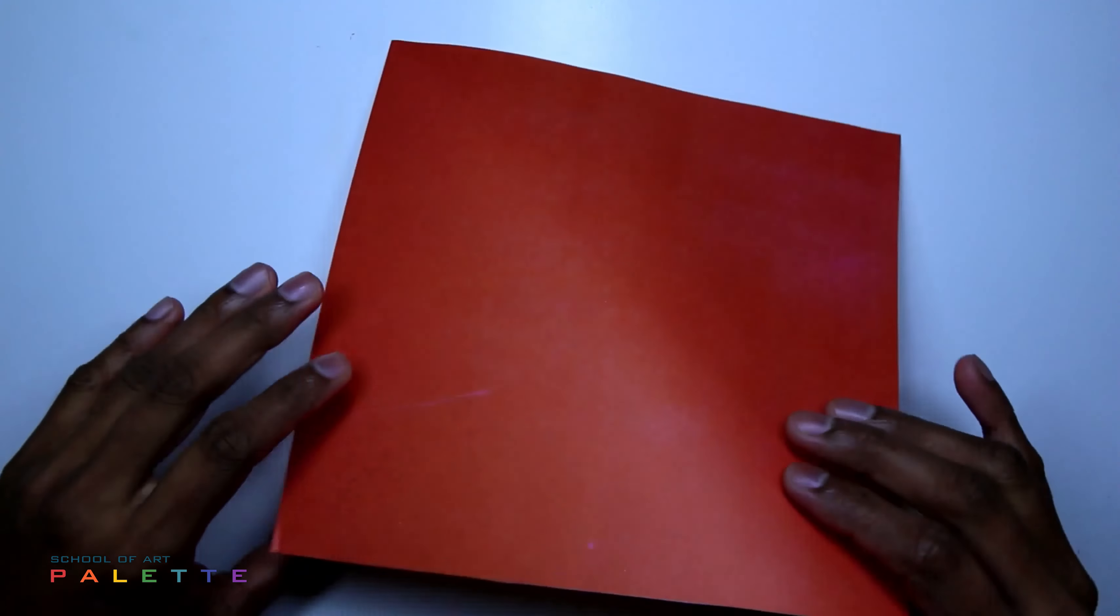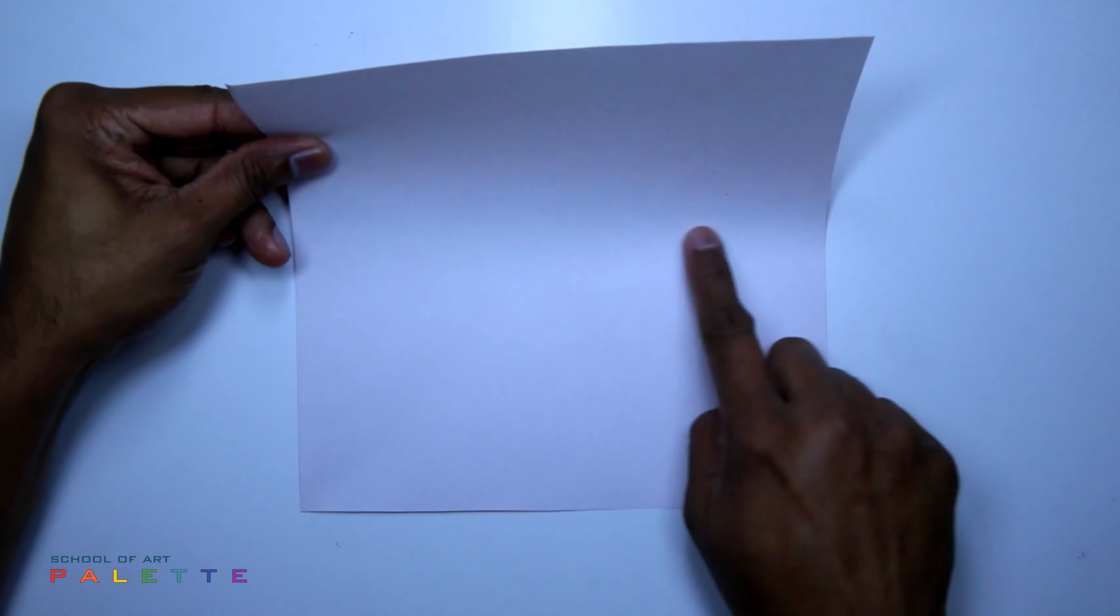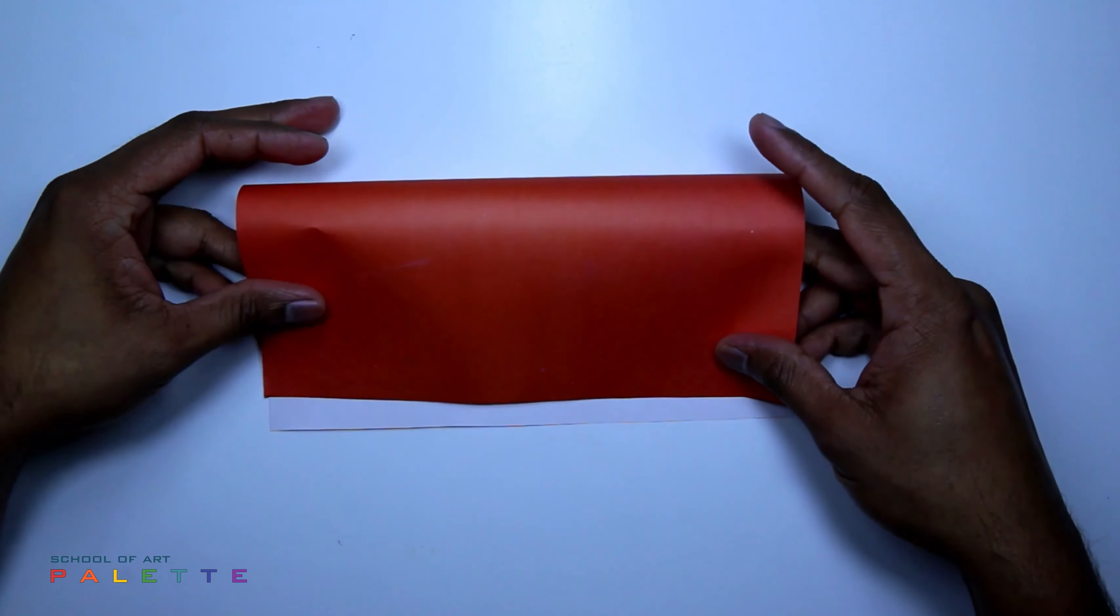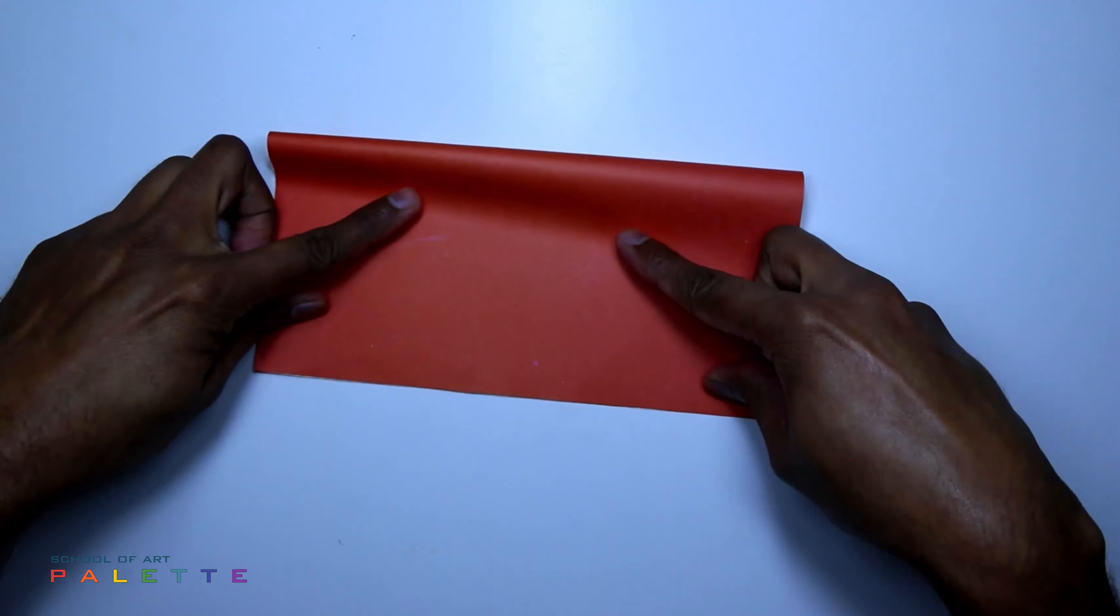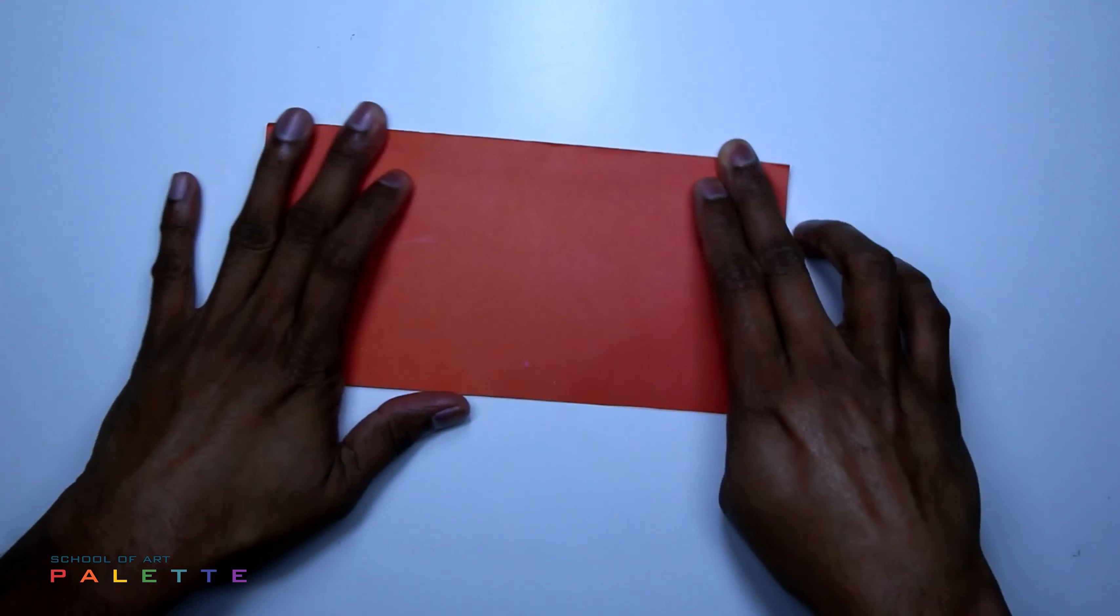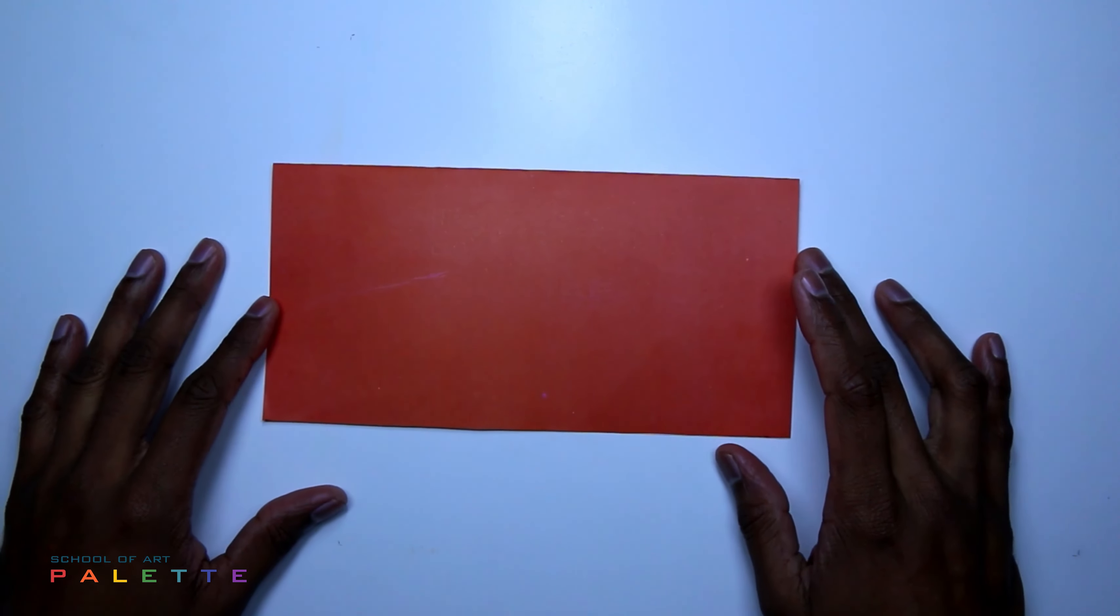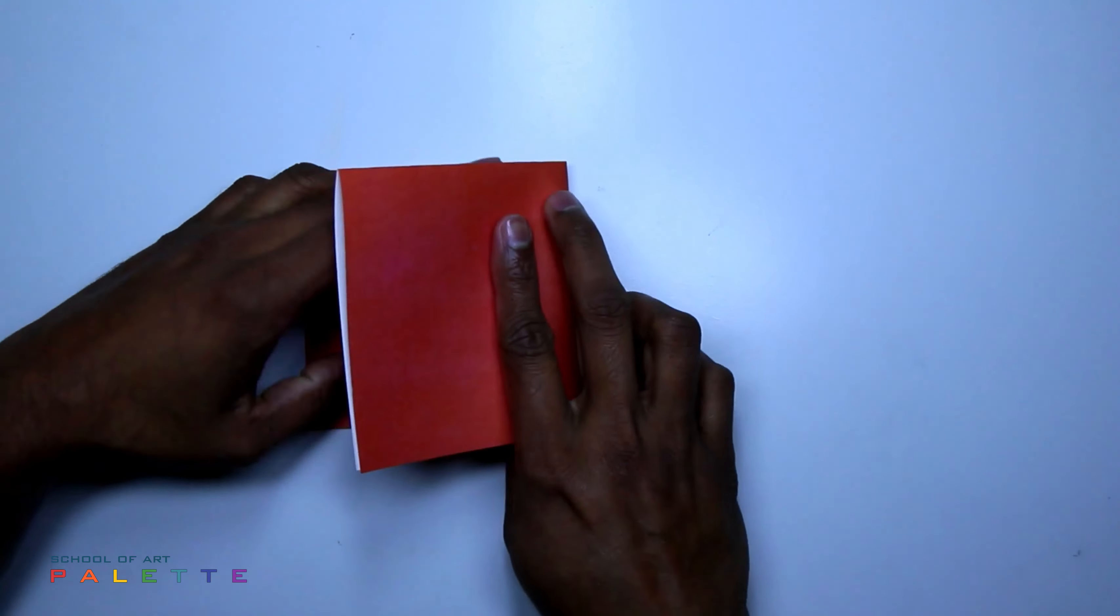Take one square size paper, then fold half. Again fold half.